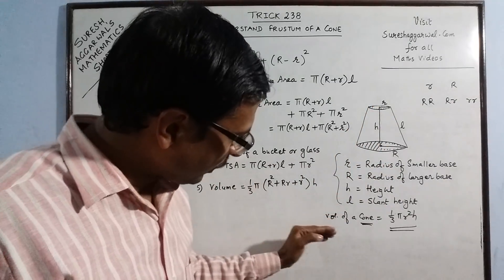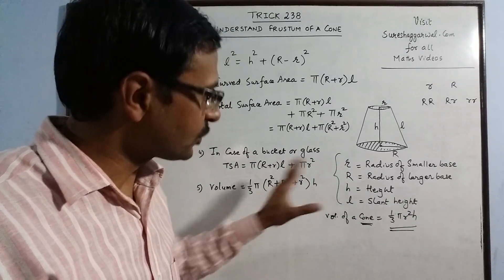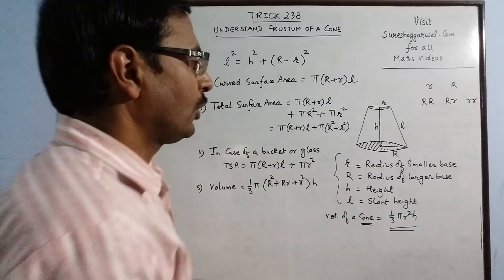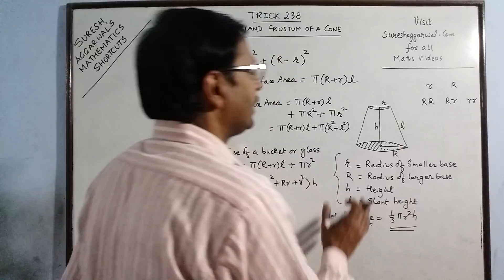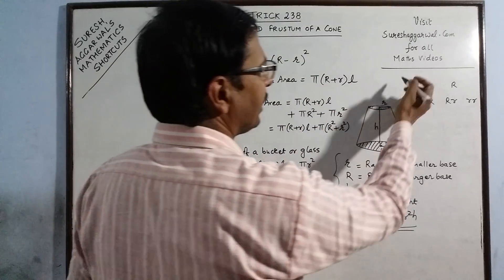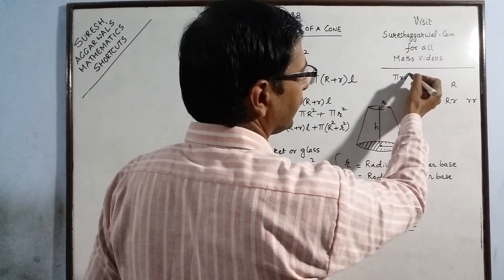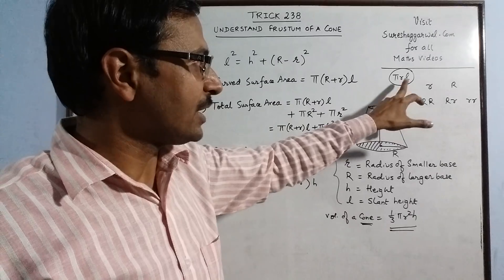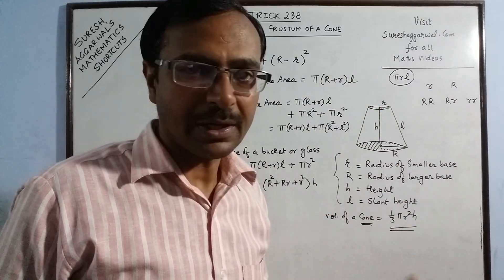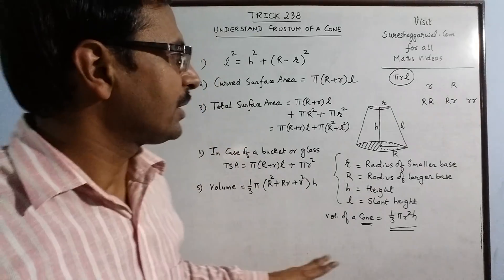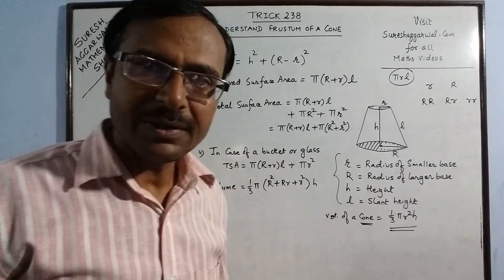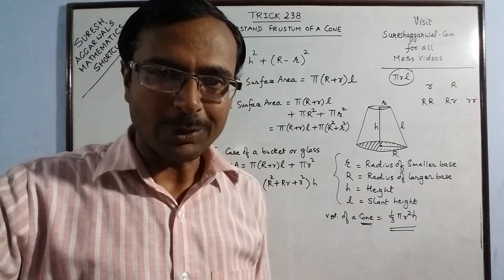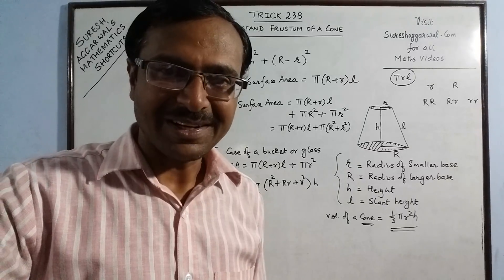Notice the relationship: for volume of a cone it is (1/3)πr²h, and for frustum we expand r² into (R² + Rr + r²). Similarly, the curved surface area of a cone is πrl, while for a frustum we have π(R + r)L — because a cone has one radius and a frustum has two radii which are added together. This is how we remember the formulas for frustum of a cone. With a basic understanding of this concept you can solve a number of problems. Keep sharing and subscribe to the channel if you like it.